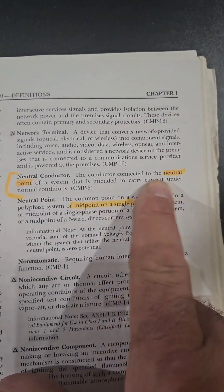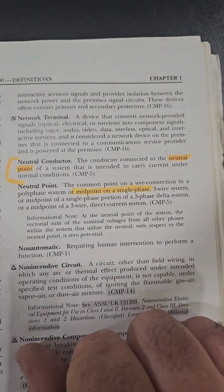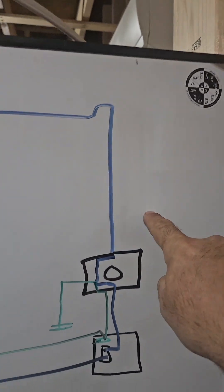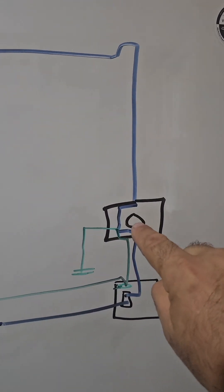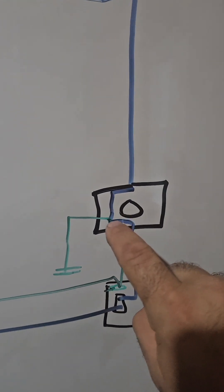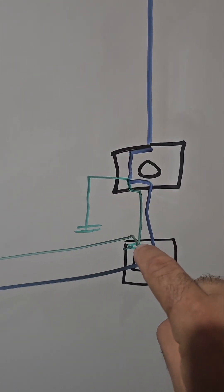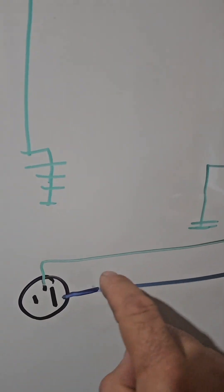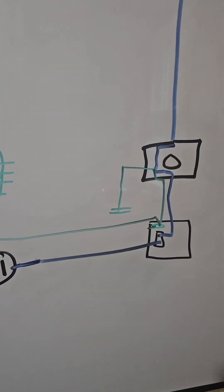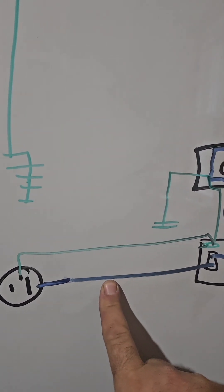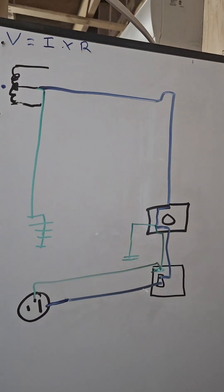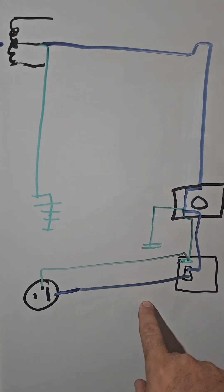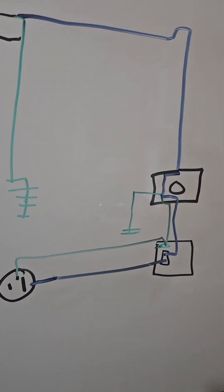Why does it say 'intended to carry current under normal conditions'? Because we have a second conductor that also connects to the midpoint. Here is where we split and our grounds and neutrals become separate. The green or bare wire is bonded to the can of the panel and goes to the third prong. Both wires are grounded and connected to the midpoint, but the neutral is the one we intentionally put current on. That is why I think this fits the definition of both a neutral and a grounded conductor — it is grounded, connected to the midpoint, and intended to carry current under normal conditions.